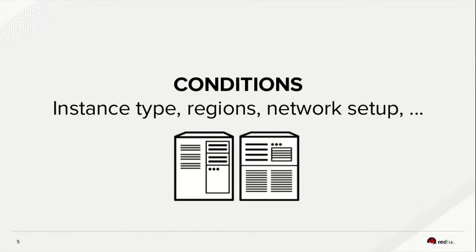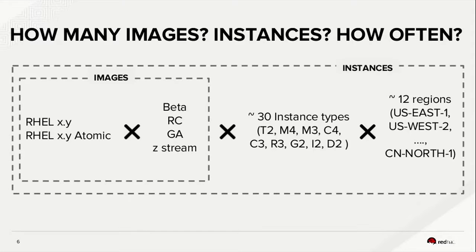In the cloud there are many different types of instances. Instance types comprise various combinations of CPU, storage, memory, and network capacity, giving you the flexibility to choose different mixes of resources for your application. With dating images, we need to ensure that any instance will work fine regardless of its type. The question becomes: how many images do we validate, how many instances do we launch, and how often do we do it?